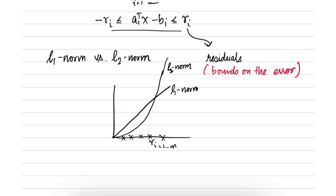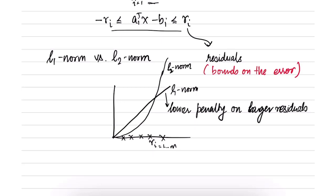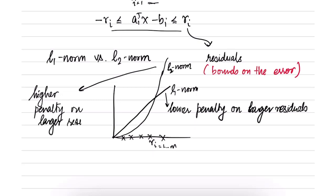In the L2 norm minimization problem, we are paying more attention to the residuals which are much larger and less attention to the residuals which are smaller. In the L1 norm minimization problem, we are paying proportional attention to all residuals. So L1 norm puts a lower penalty on larger residuals, while L2 norm puts a higher square penalty on larger residuals.